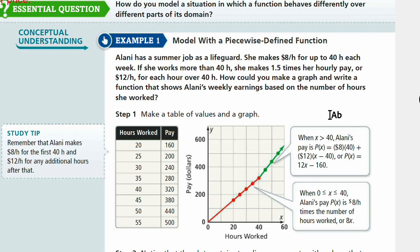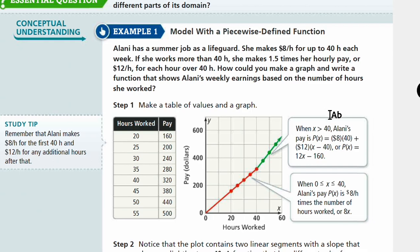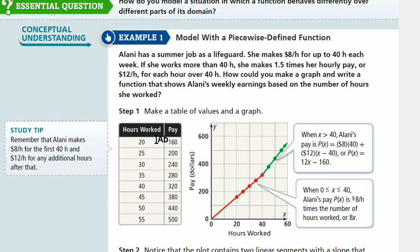Step 1, let's make a table of values and a graph. For 20 hours worked, she should be paid $160 because she makes $8 per hour until 40 hours. 20 times 8 is $160. 25 times 8, 30 times 8, 35 times 8. And then up until 40, she will have the same pay, $8 per hour.